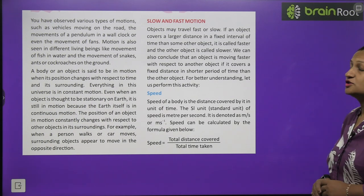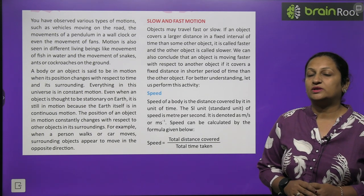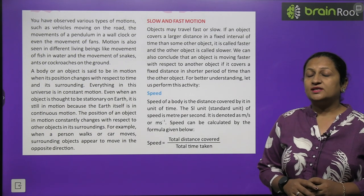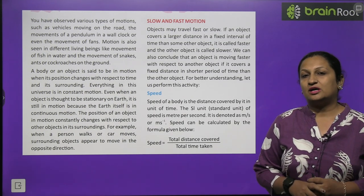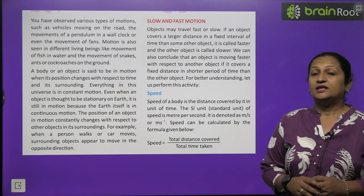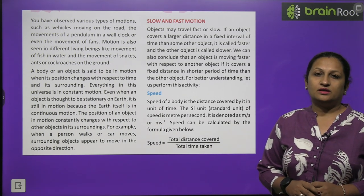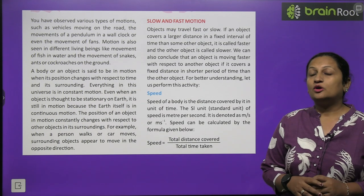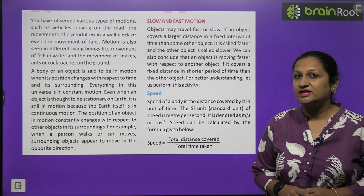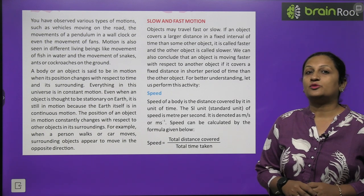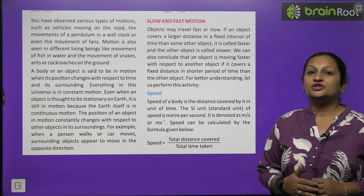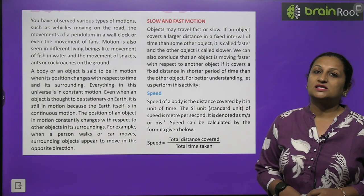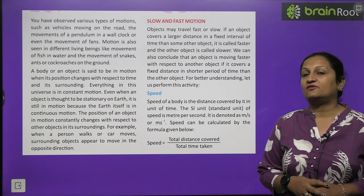We can conclude that an object is moving faster with respect to another if it covers a fixed distance in a shorter period of time. To understand this, you can perform an activity with your friend — you both decide to travel from one place to another, and whoever covers more distance in a short period of time is showing fast motion. Motion where we cover more distance in a short interval of time is fast motion, and covering less distance in a large interval of time is slow motion.